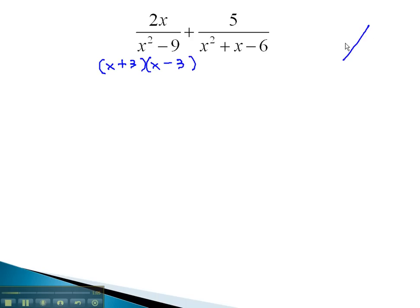The second denominator, we must use the AC method, multiplying to negative 6 and adding to 1. This is done with 2 and 3 if the 2 is negative. Because of the 1 in front of x squared, it factors to x minus 2 times x plus 3.